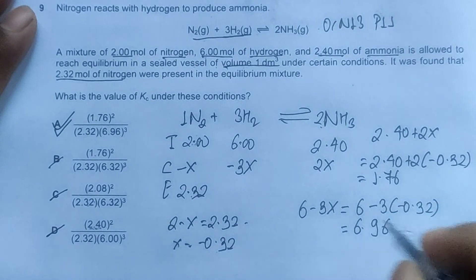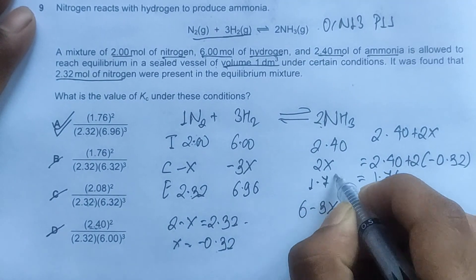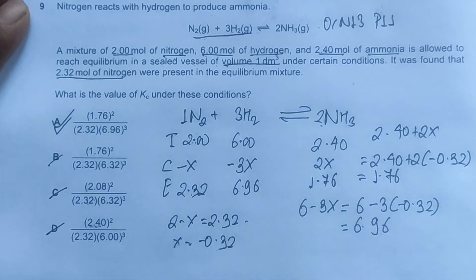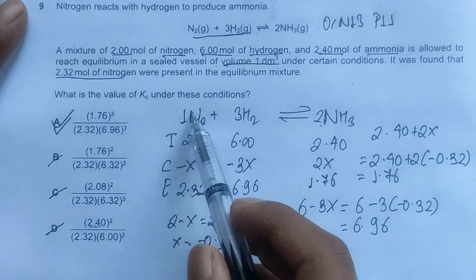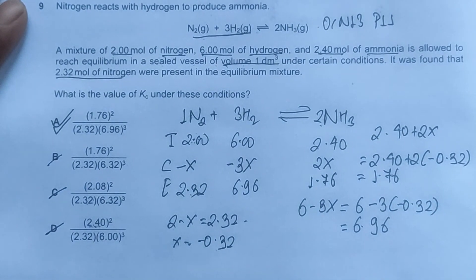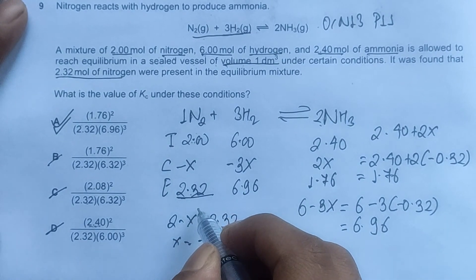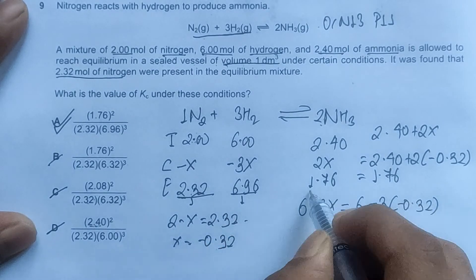So we'll write the Kc expression here. Another thing to notice is volume is given as 1 dm³. We'll write 6.96 and 1.76.